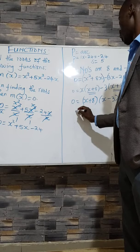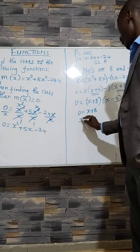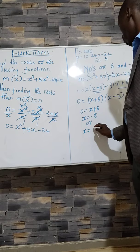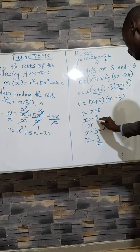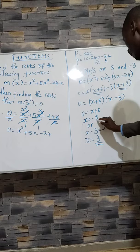We equate each factor to 0. 0 = x + 8, so x = -8. Or x - 3 = 0, so x = 3. Therefore, the roots are x = -8 or x = 3. That's our answer.